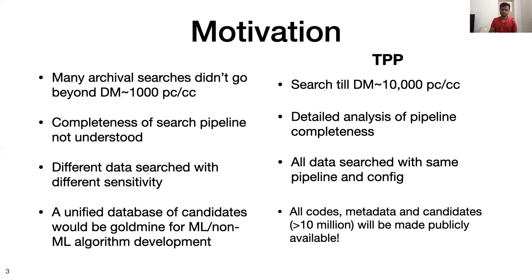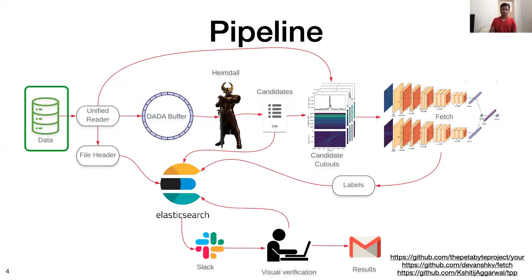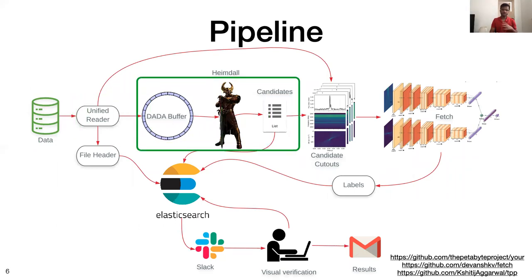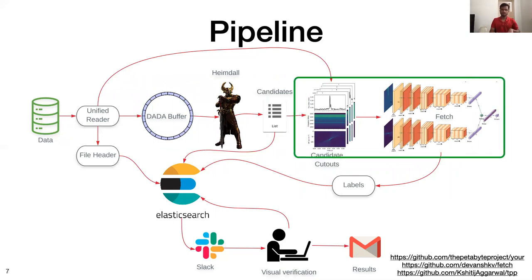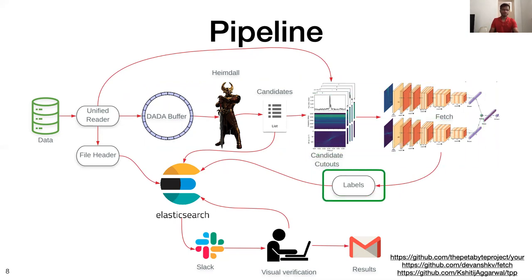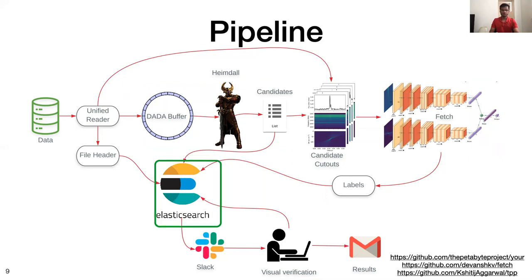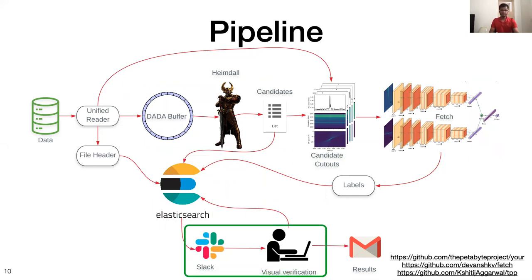Let's look at the pipeline. Starting from the data, this data is then read into what we call a unified reader, which then passes the data to Heimdall, where it does its magic of single pulse searching and generates candidates. These candidates are then pre-processed and passed on to FETCH, which is a really powerful and accurate machine learning-based classifier. FETCH then classifies all of these events as FRBs or RFI and provides us the label. All of this information along with the metadata of all the candidates and files would be saved into an Elasticsearch database, which would also notify the TPP team whenever anything interesting is found.